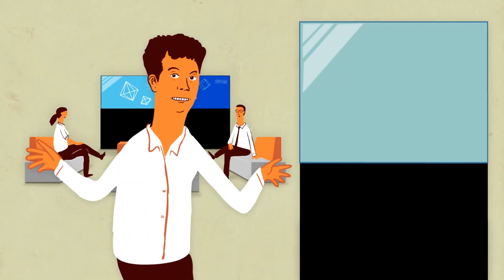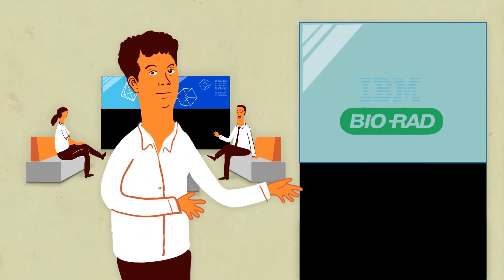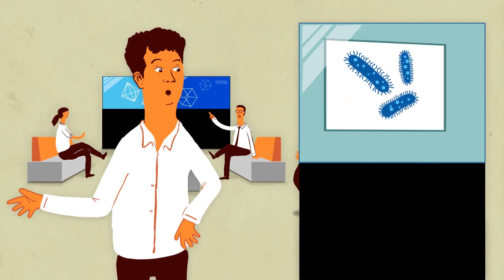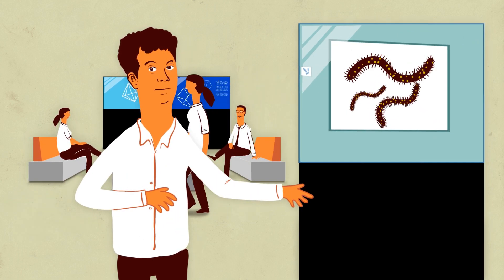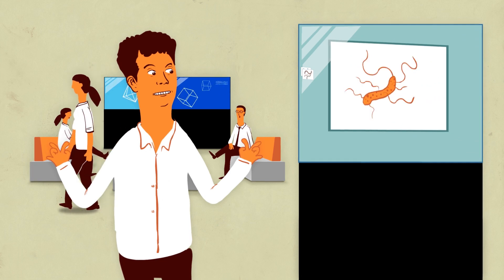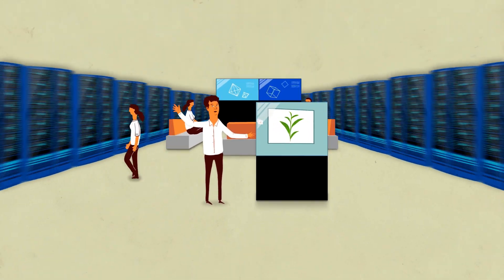That's why Mars and IBM joined forces, to sequence the genomes of all the organisms in the food supply chain. That's millions of organisms. But big data is what IBM is good at.